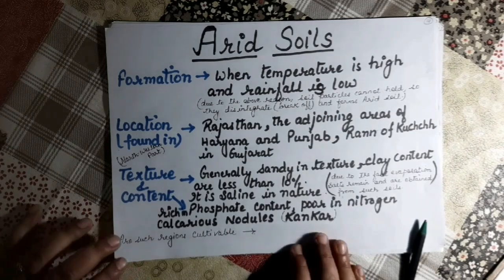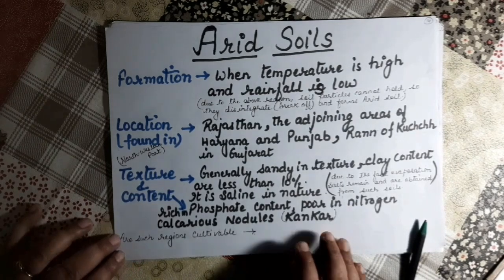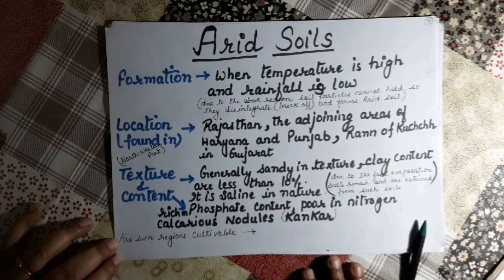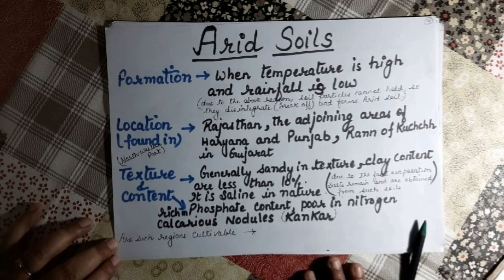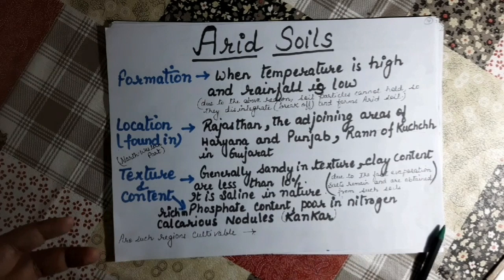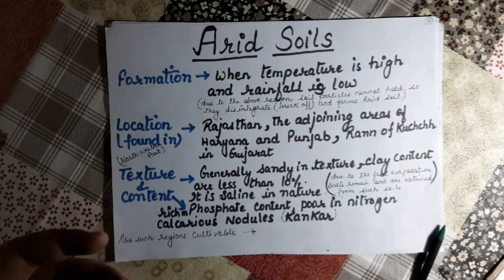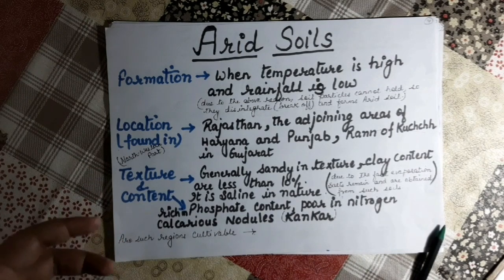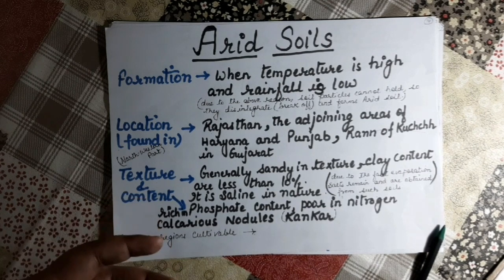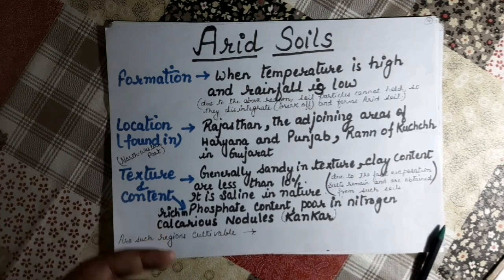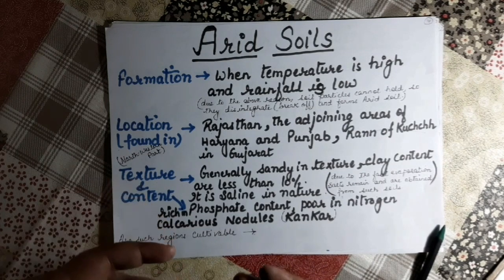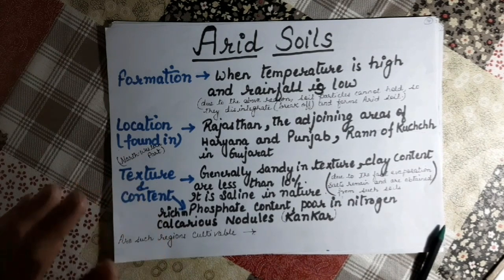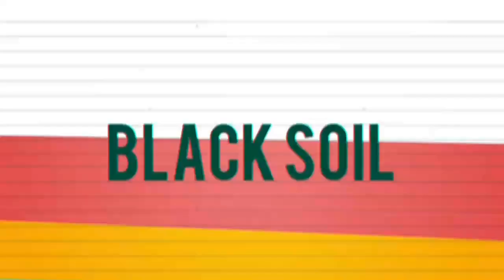Arid regions are cultivable with proper application of chemical fertilizers and irrigation. A variety of crops can be grown such as wheat, millet, barley, maize, pulses, and cotton.